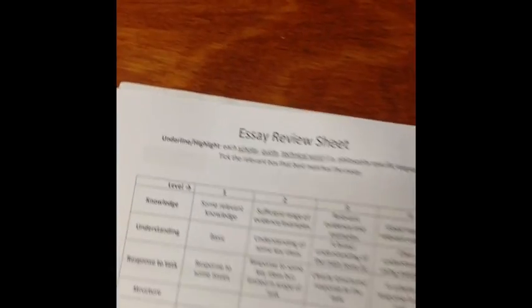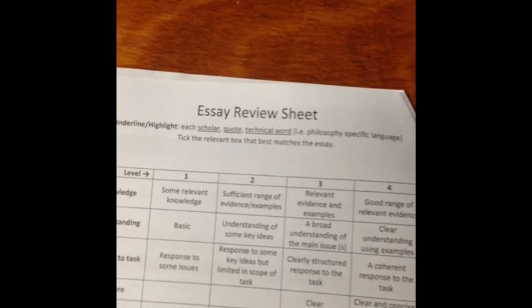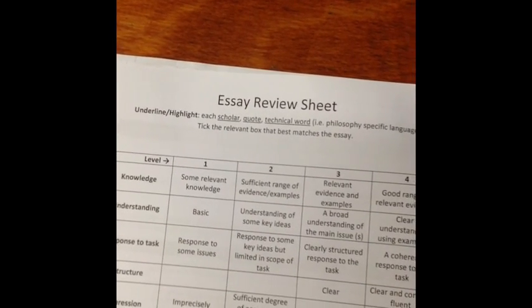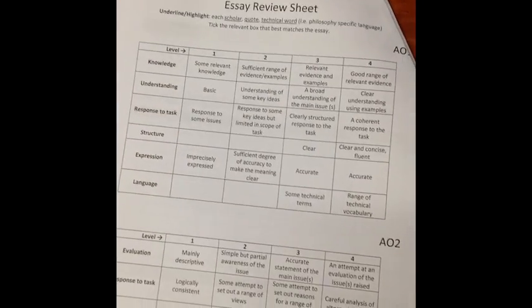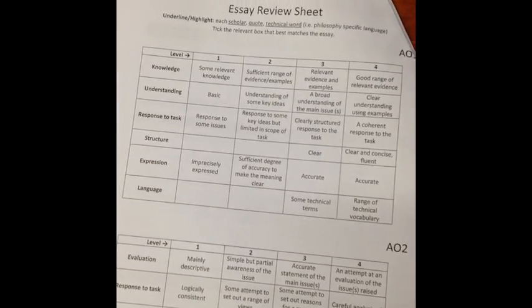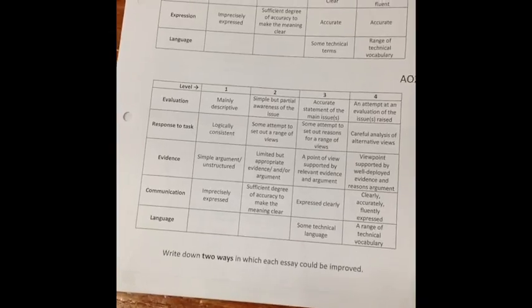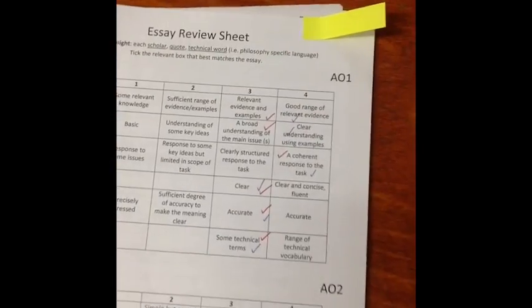What I decided to do was make my own review sheet that you can see here. First of all, I got them to do some of the signposting that the chief examiner likes to see in essays — underlining the scholar, the quote, and some of the technical words. I then broke up the mark scheme using the same language into this grid style of mark scheme, which the students found a lot easier to understand. You can see how one student has used it here.